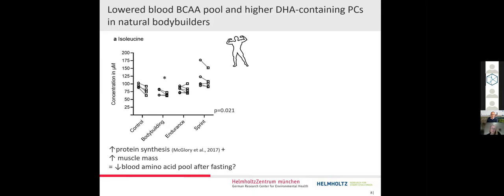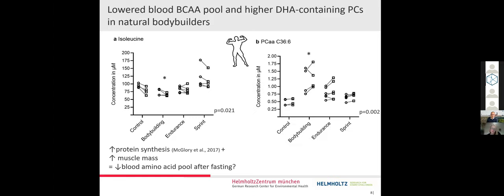The second finding that was different in natural bodybuilders were higher DHA-containing phosphatidylcholines. When we look at the graph, this statistical difference probably comes from the upper two participants. We looked at the nutritional and supplementary diaries of the subjects, and we found that these two subjects were supplementing fish oils, which are rich in omega-3, comprising DHA.